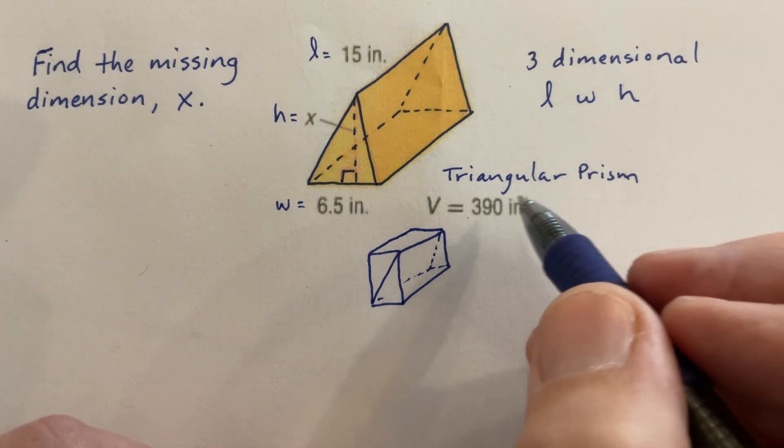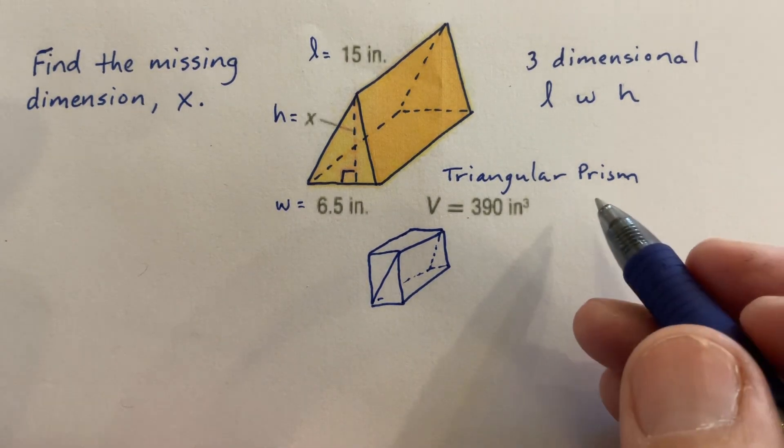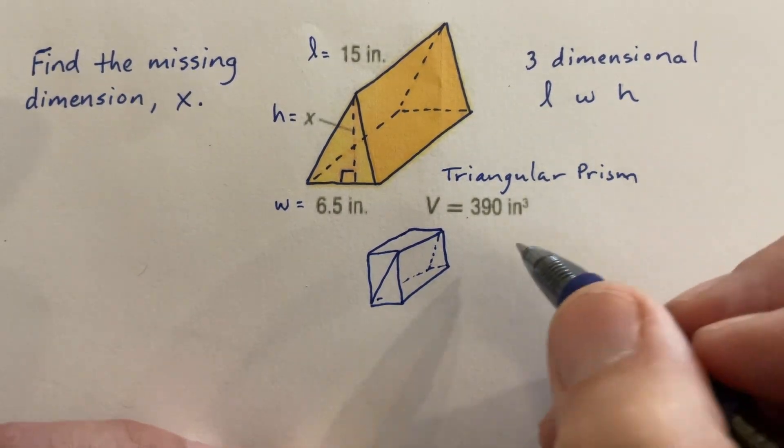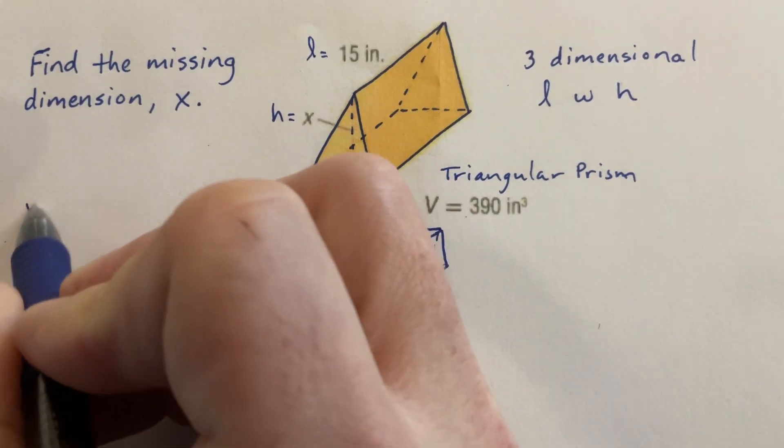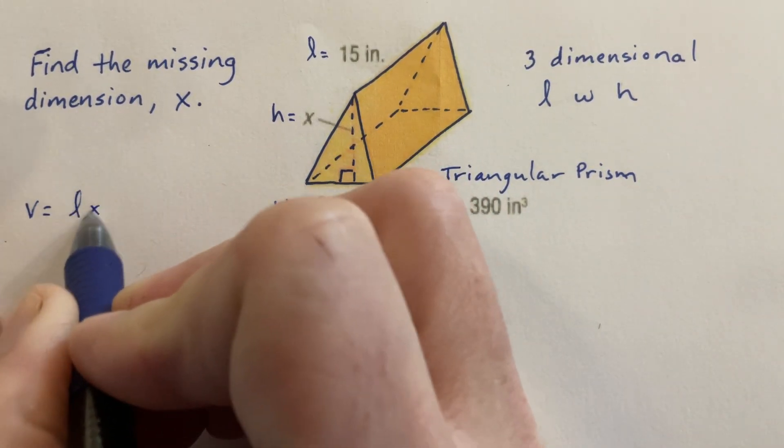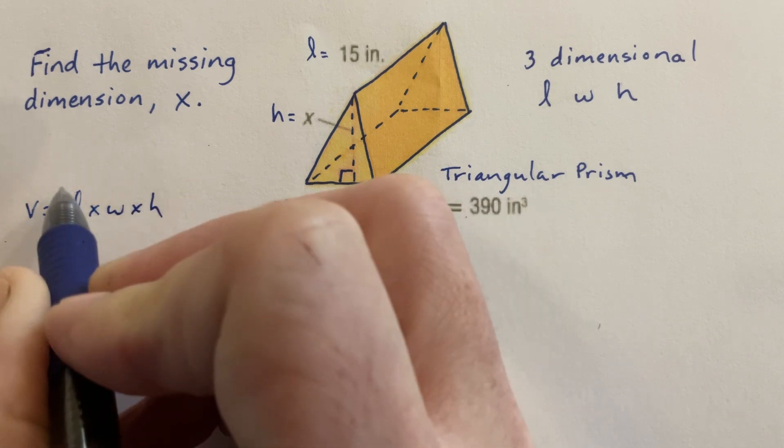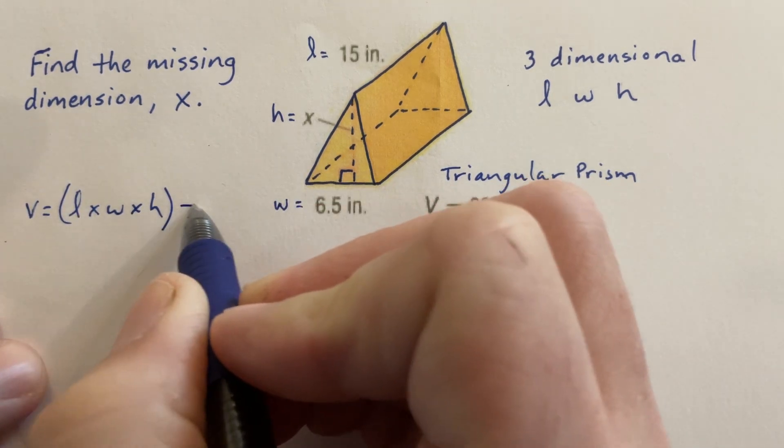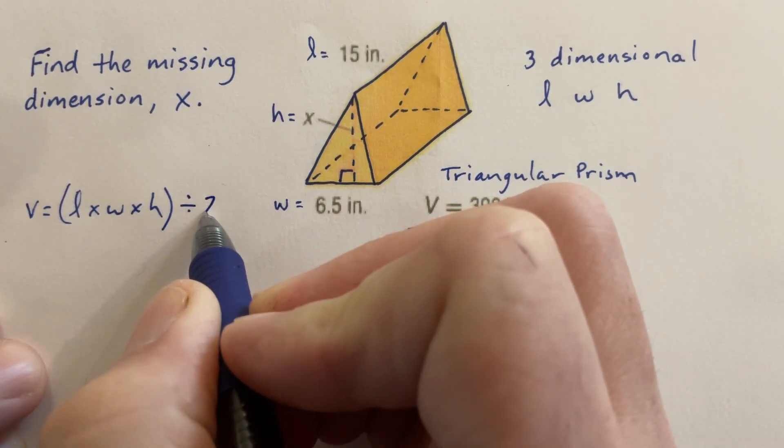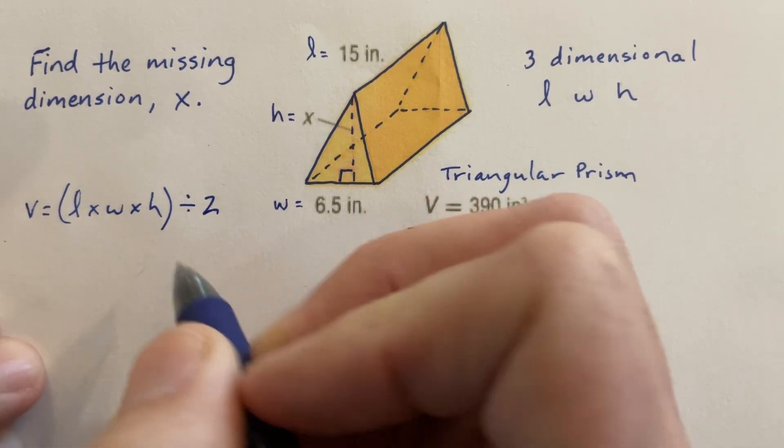The equation that we're going to be working with today is volume equals length times width times height. And since it's this triangular prism, it's going to be half of a rectangular prism, length times width times height.